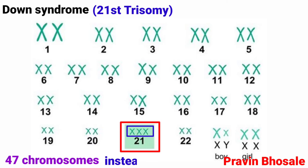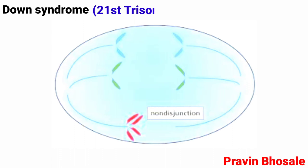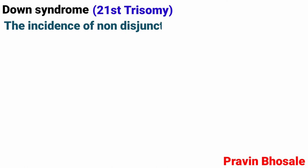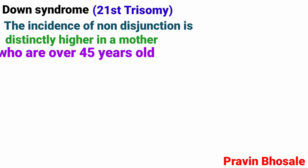21st trisomy occurs due to non-disjunction, or failure of separation of autosomes during gamete formation. The incidence of non-disjunction is distinctly higher in mothers who are over 45 years old.